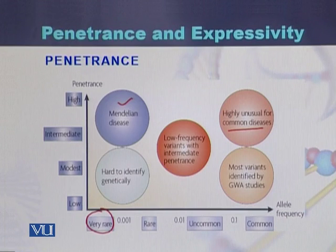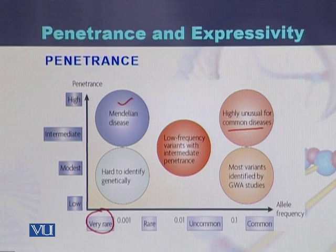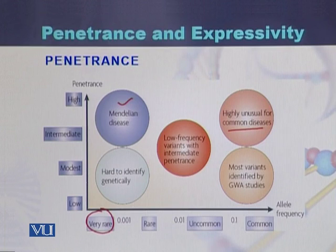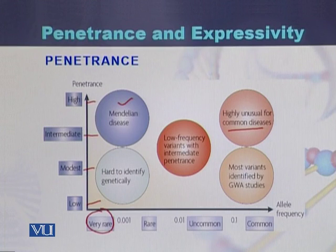There is a relationship between penetrance and allele frequency. If allele frequency is rare, penetrance will be higher, while if diseases are common, the allele frequency will be common. In Mendelian disorders, penetrance is high, while for low-frequency variants, penetrance can be intermediate.